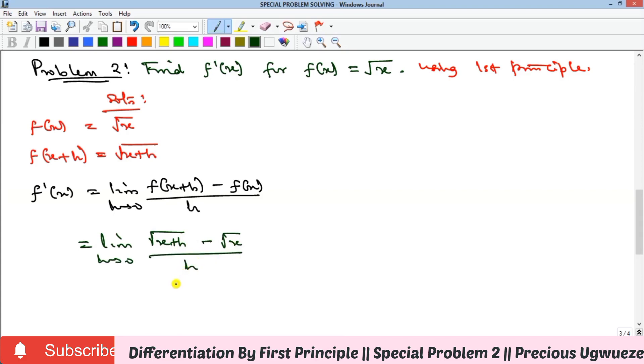At this point, if we do a direct substitution of h as zero, we're going to have √x minus √x, which is zero, and h is zero in the denominator, which we do not want. You recall that we have treated limits and also handled limits that contain roots.